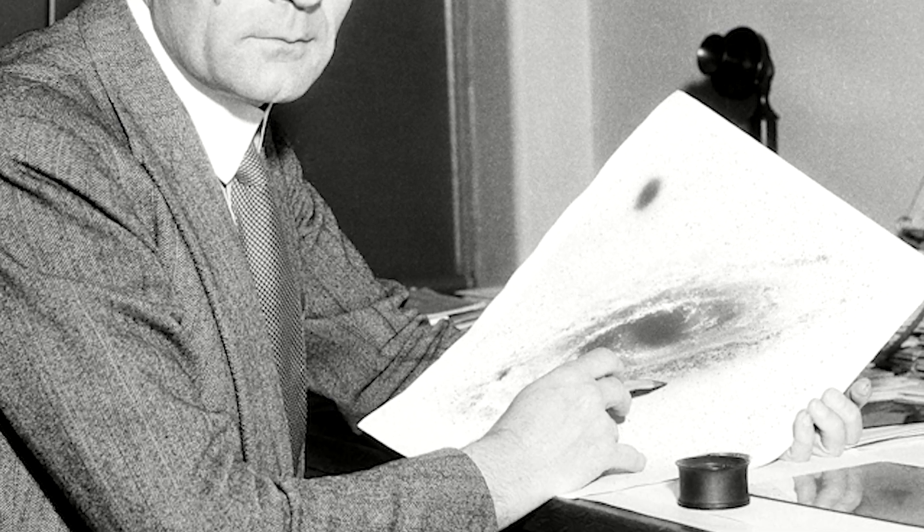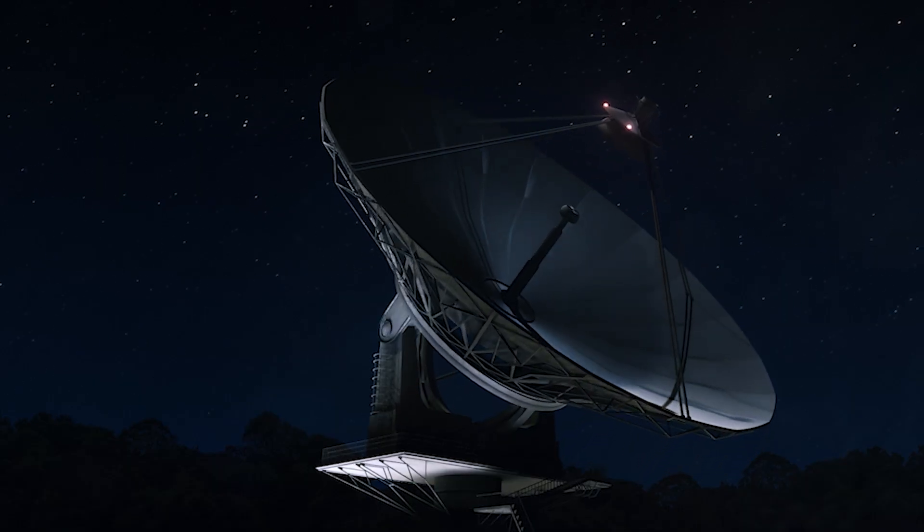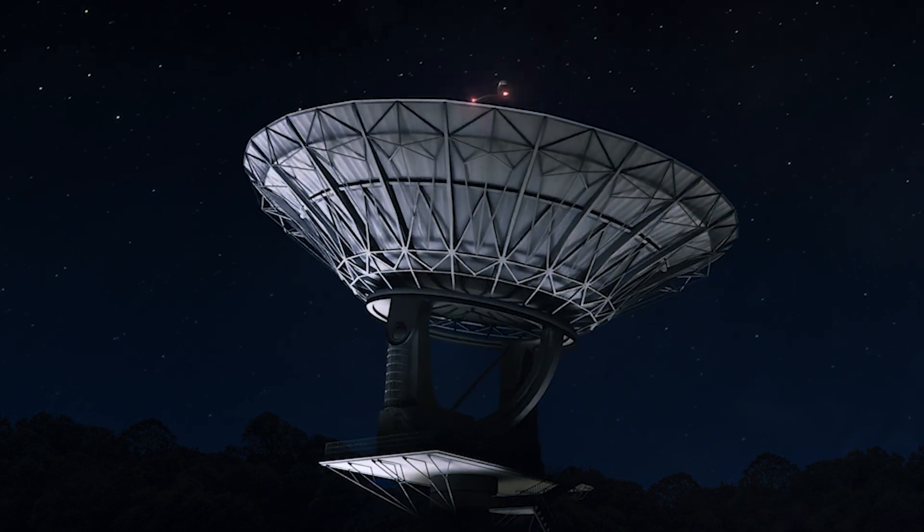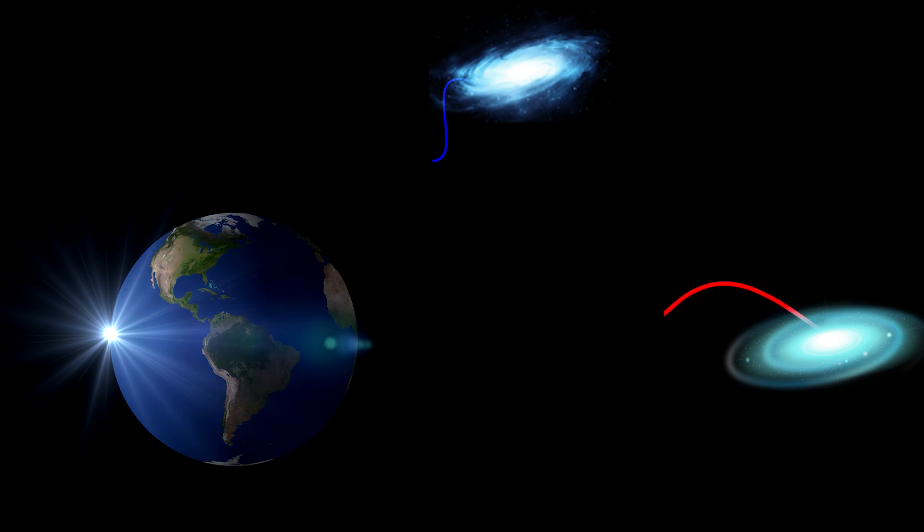This discovery made him think that something must be happening between Earth and those galaxies, causing the redshift effect. So what did he do? He observed more galaxies and, surprisingly, noticed the same phenomenon with every galaxy he pointed his telescope towards.